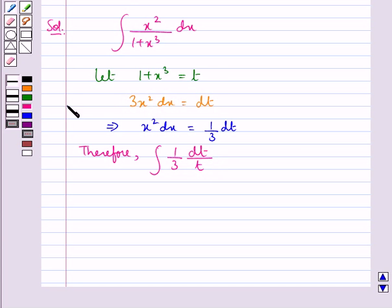On substituting 1 plus x cubed equal to t in this integral and taking x squared dx equal to 1 upon 3 dt we get this.